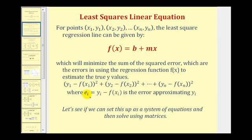e sub i would be the error or the difference between the true y value and the function value from the line, and if we square all these errors, we have the sum of the squared errors. Let's see if we can set this up as a system of equations and then solve using matrices.